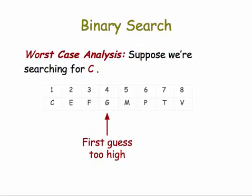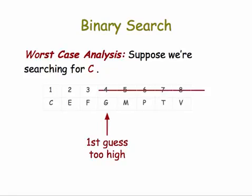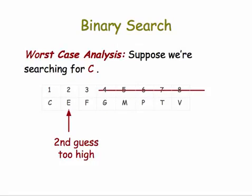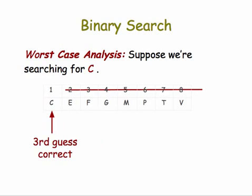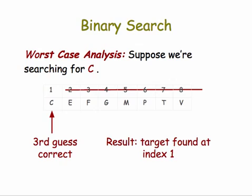We initially guess the letter at location 4, but that guess is too high. So we cut off the top half of the list and we make our next guess at the middle of the bottom half. So our next guess is at index 2, but that's also too high. So we cut off the top half of that sublist and we make a third guess, which is correct. So we found our target. So the result in this case was the target was found at index 1. And to summarize this, we had eight items to search through and we were able to find the item we were looking for in three guesses.